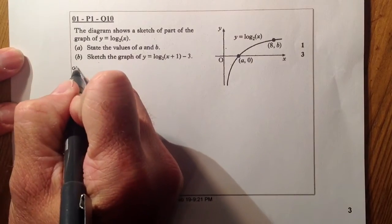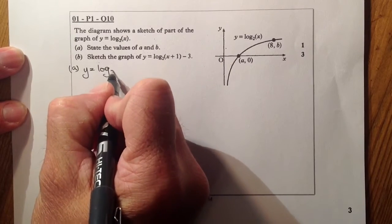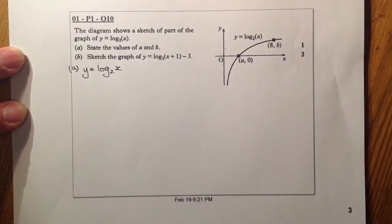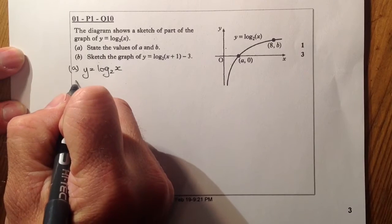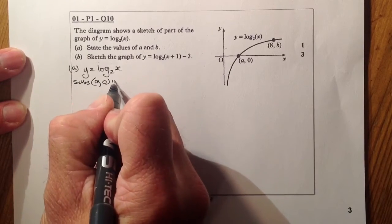So we'll go for part a first of all. What I'll do is I'll start with the equation y equals log x to base 2, and I'll substitute the point a, 0 into the above.